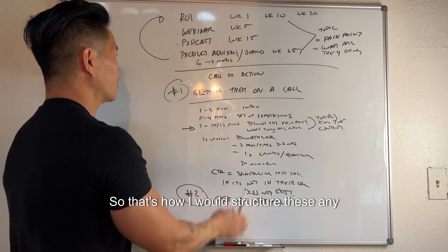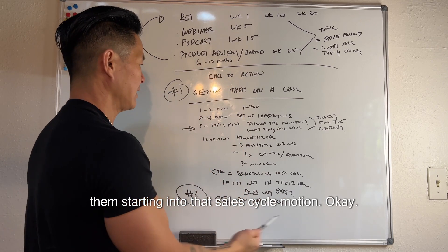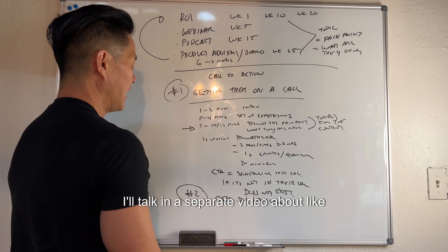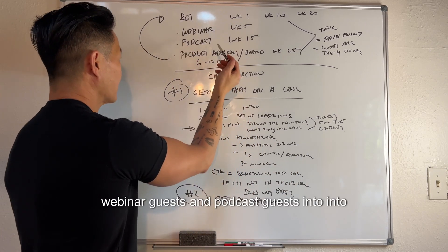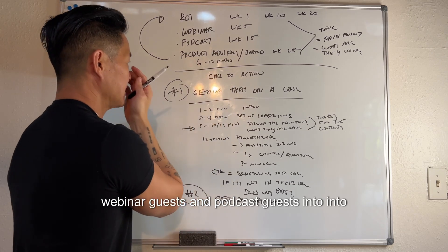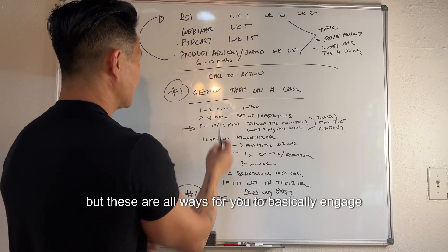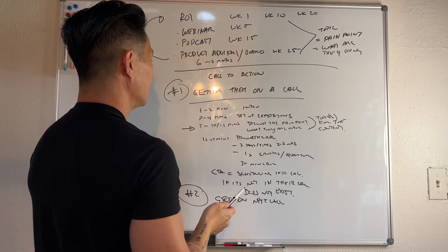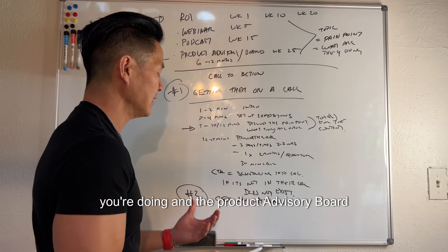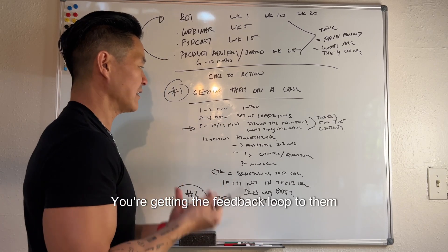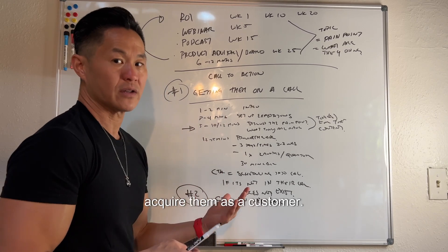That's how I would structure any of these types of conversations to get them into a sales cycle motion. I'll cover in a separate video how to leverage webinar and podcast guests into a more forward-facing sales motion. But these are all ways to engage, qualify, and share what you're doing. In the product advisory board situation, you're getting a feedback loop to make the iterations necessary to ultimately acquire them as a customer.